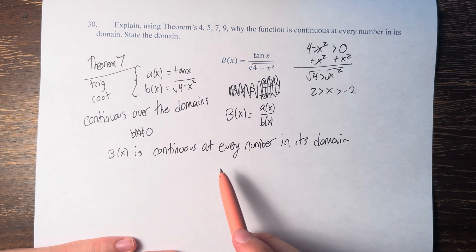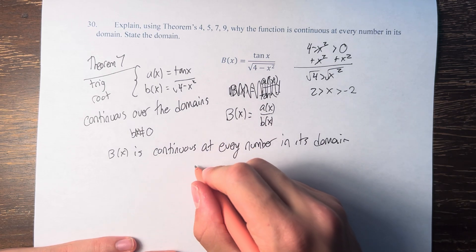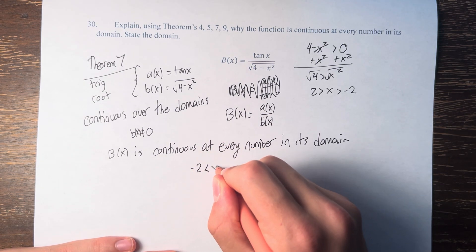So B(x) is continuous at every number in its domain. What is that domain? Negative 2 is less than x is less than 2.